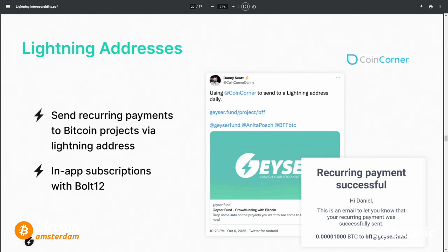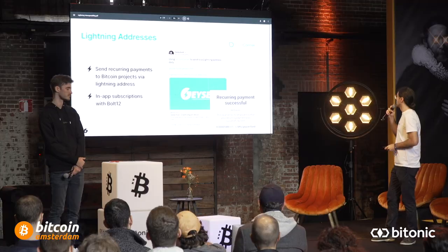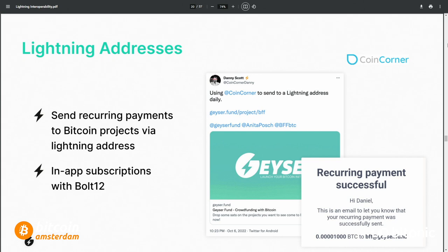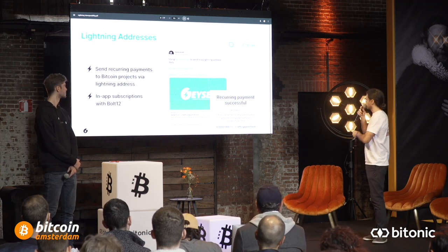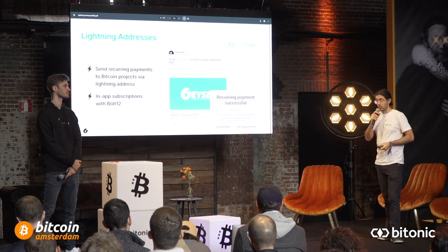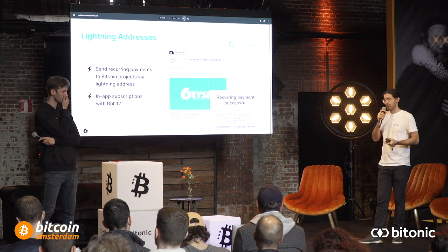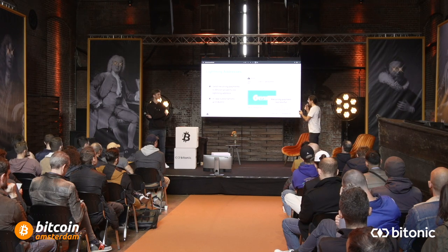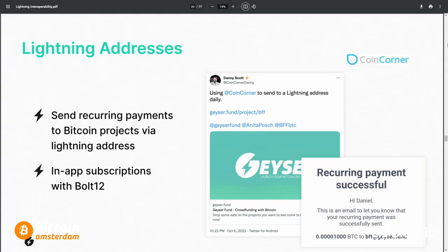Another cool example: Danny from CoinCorner — a Lightning exchange where you can buy Bitcoin — also integrated Lightning addresses and offers a service where you can subscribe to a project and send recurring payments daily, weekly, or monthly. Danny decided to send recurring payments of 1,000 Satoshis per day directly to BFF, which is Bitcoin for Fairness, at Geyser.fund. That's the power of interoperability. We're also looking forward to subscriptions coming natively to Lightning so users can subscribe directly from their own wallets.